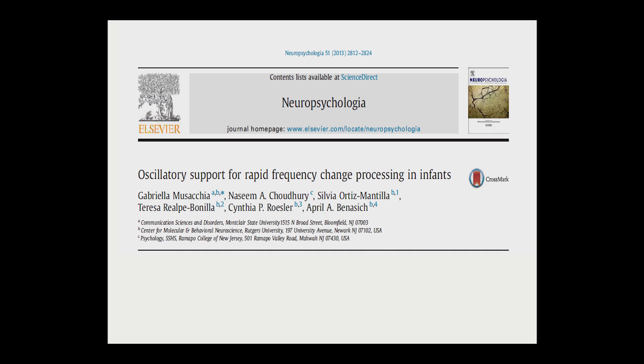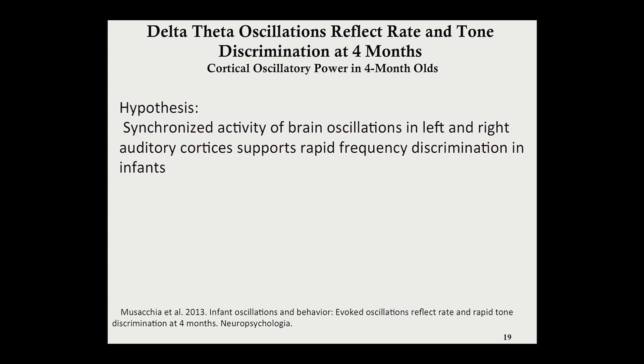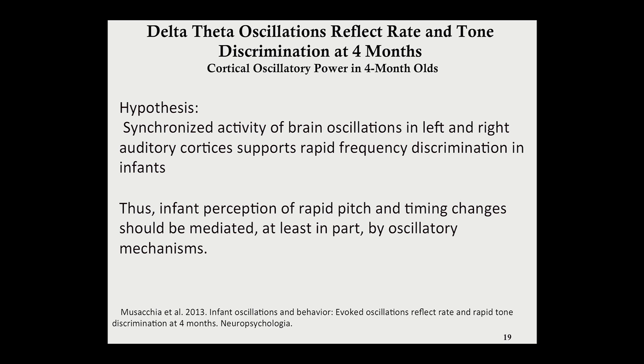We were then interested in examining oscillatory support in younger infants. Using event-related potential source localization and a time-frequency analysis of event-related oscillations, we examined the neural substrates of rapid auditory processing in four-month-olds. Animal models and adult experiments suggest that oscillatory synchrony, and in particular low-frequency oscillations in the delta and theta range, play key roles in rapid auditory processing and auditory change detection. We hypothesized that synchronized activity of brain oscillations in left and right auditory cortices would support rapid frequency discrimination in infants, and that infant perception of rapid pitch and timing changes should be mediated at least in part by oscillatory mechanisms — issues that had not been looked at in human infants at all.